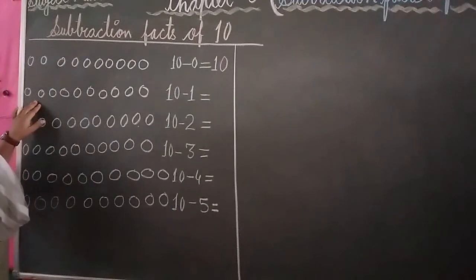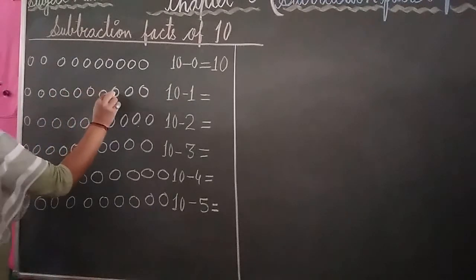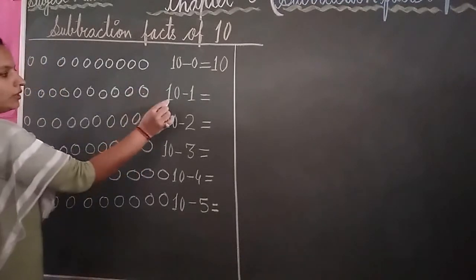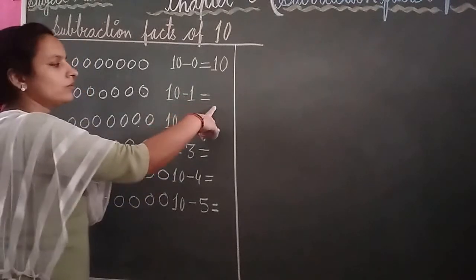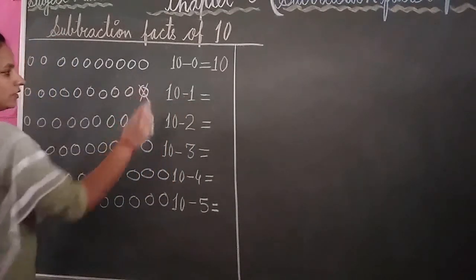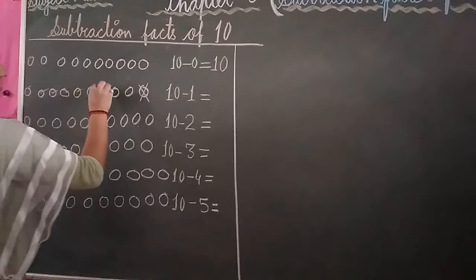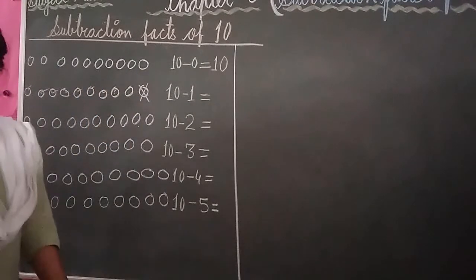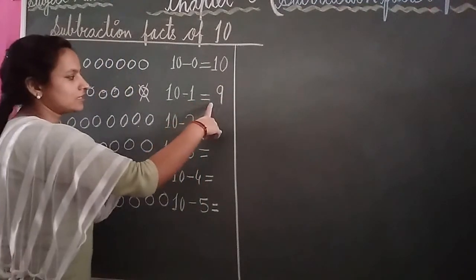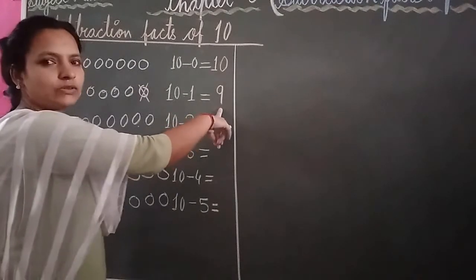Again draw your 10 balls: 1, 2, 3, 4, 5, 6, 7, 8, 9 and 10. Write your number: 10 minus 1. Cut and cross out 1 ball. Count the balls left: 1, 2, 3, 4, 5, 6, 7, 8, 9. How many balls are left? 9. 10 minus 1 equal to 9. The answer is 9.